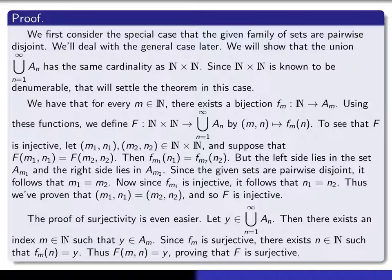What we're going to do is show that the union of all these a's has the same cardinality as N cross N. And since we know that N cross N is denumerable, then that will prove that this union is also denumerable.